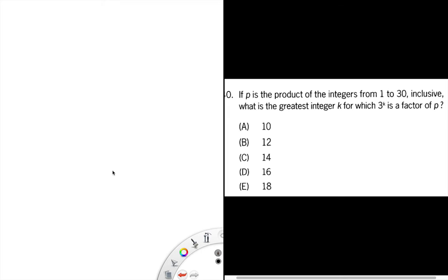The product of the integers 1 to 30 is 30 factorial. We know that 3^k must be a factor of this, meaning that this expression must be an integer.